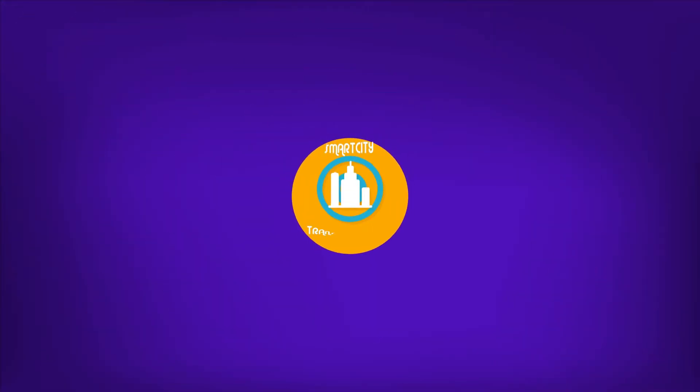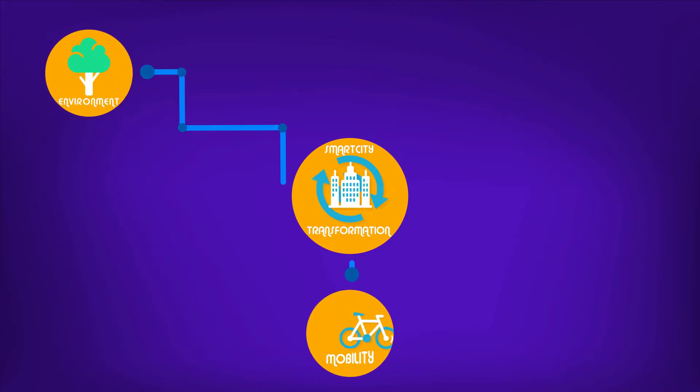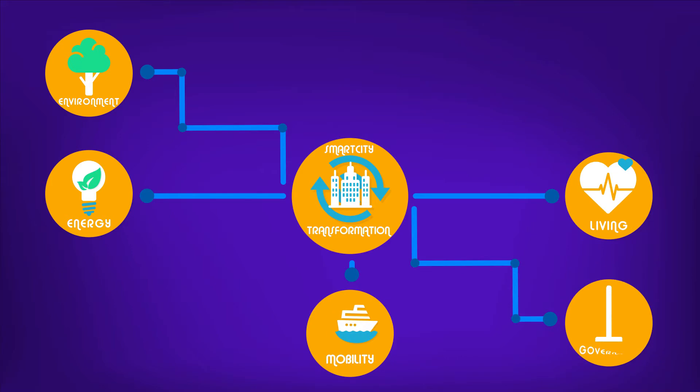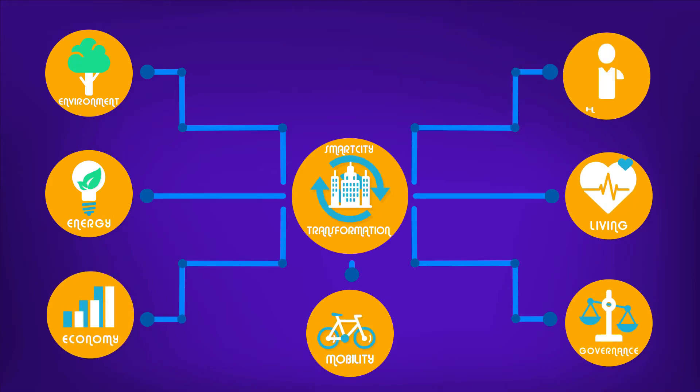We have identified seven main domains to study for smart city transformation of Istanbul: Environment, Mobility, Energy, Living, Governance, Economy, and Human.